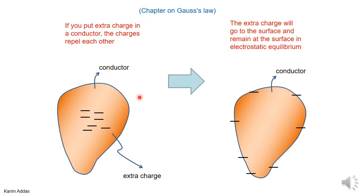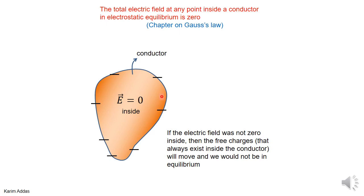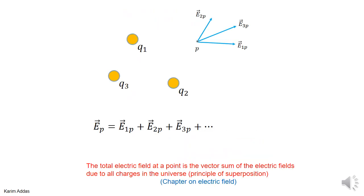From Gauss's law, we showed that if you put extra charge inside a conductor, the extra charge — in this case negative charge — will go to the surface. In equilibrium, it will be located at the surface, and also in equilibrium, the electric field inside the conductor is zero.